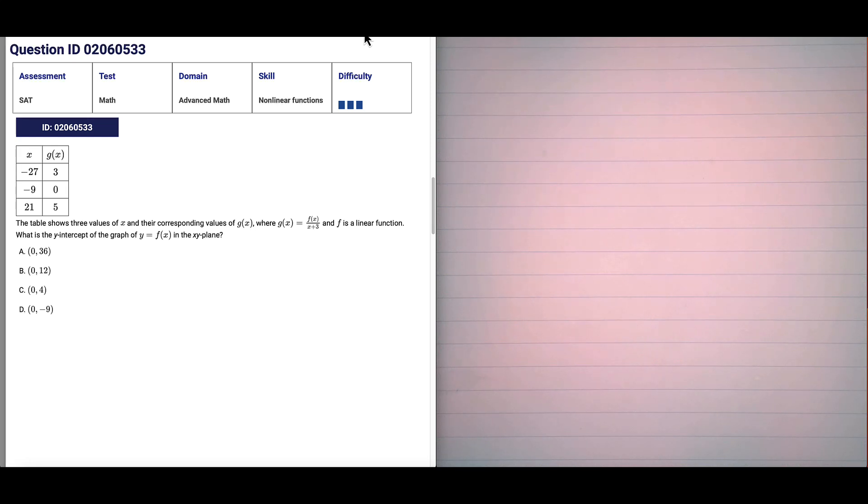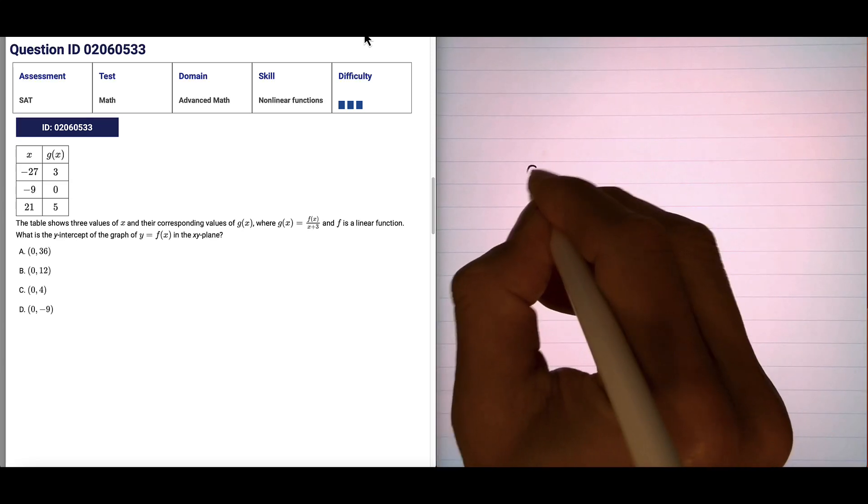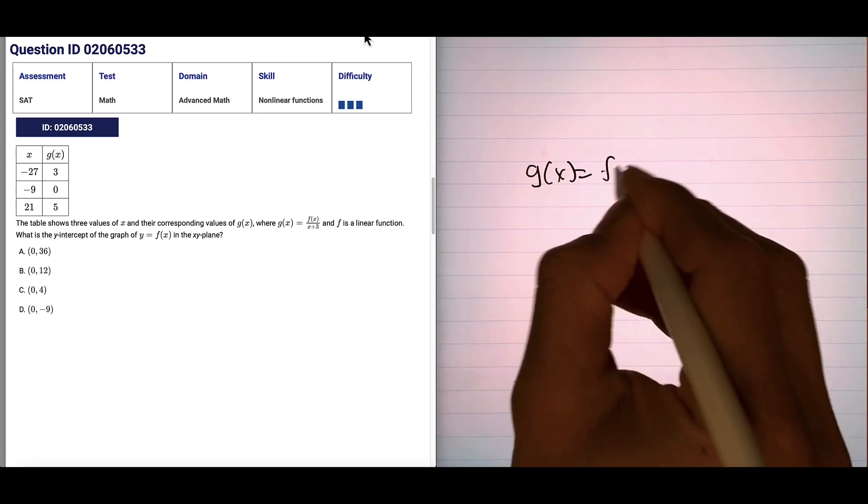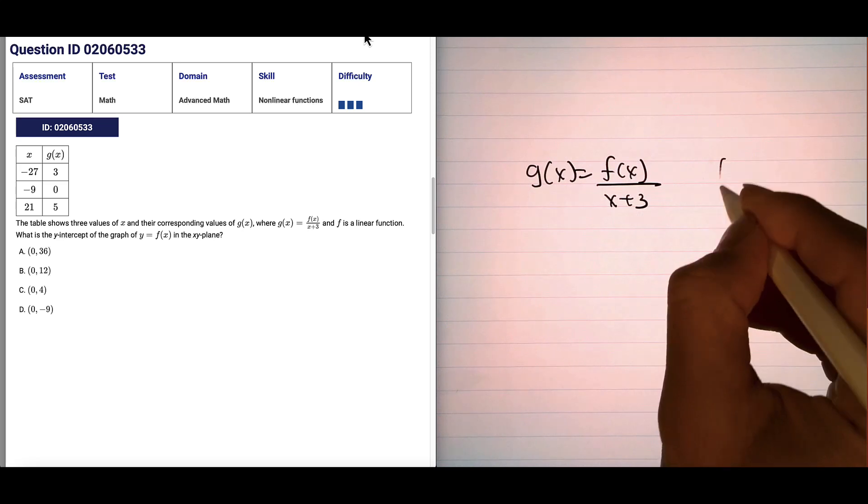The table shows three values of x and their corresponding values of g of x, where g of x equals, let's write it down, g of x equals f of x over x plus 3, and f is a linear function.